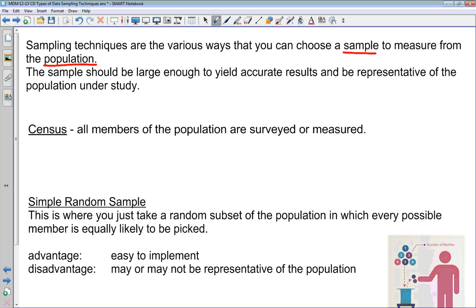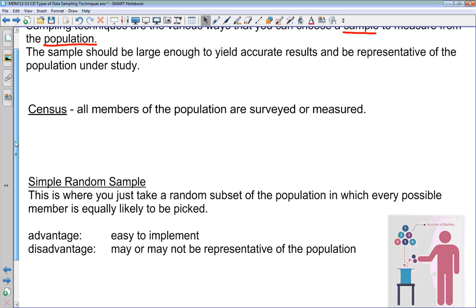These two points sort of influence each other. The more representative your sample is, the smaller it can be. If your sample is less representative of the population, then you need a much bigger sample in order to get better results. Now before we get into individual sampling techniques, the first word we should define here is census.